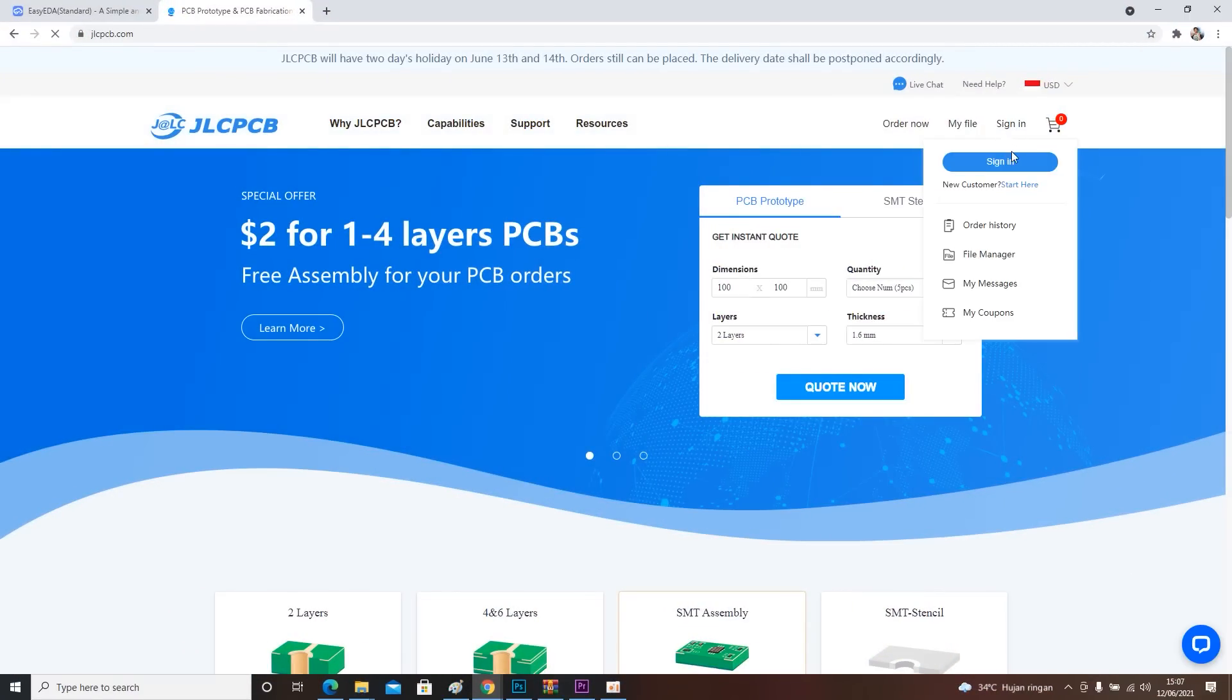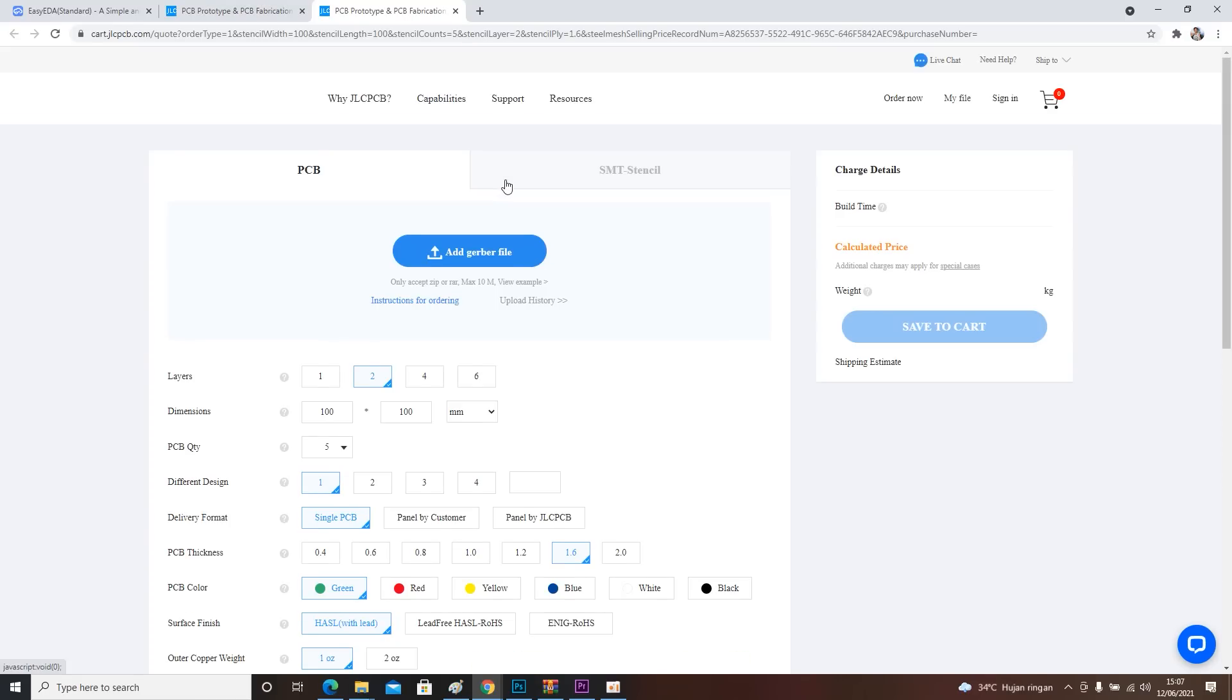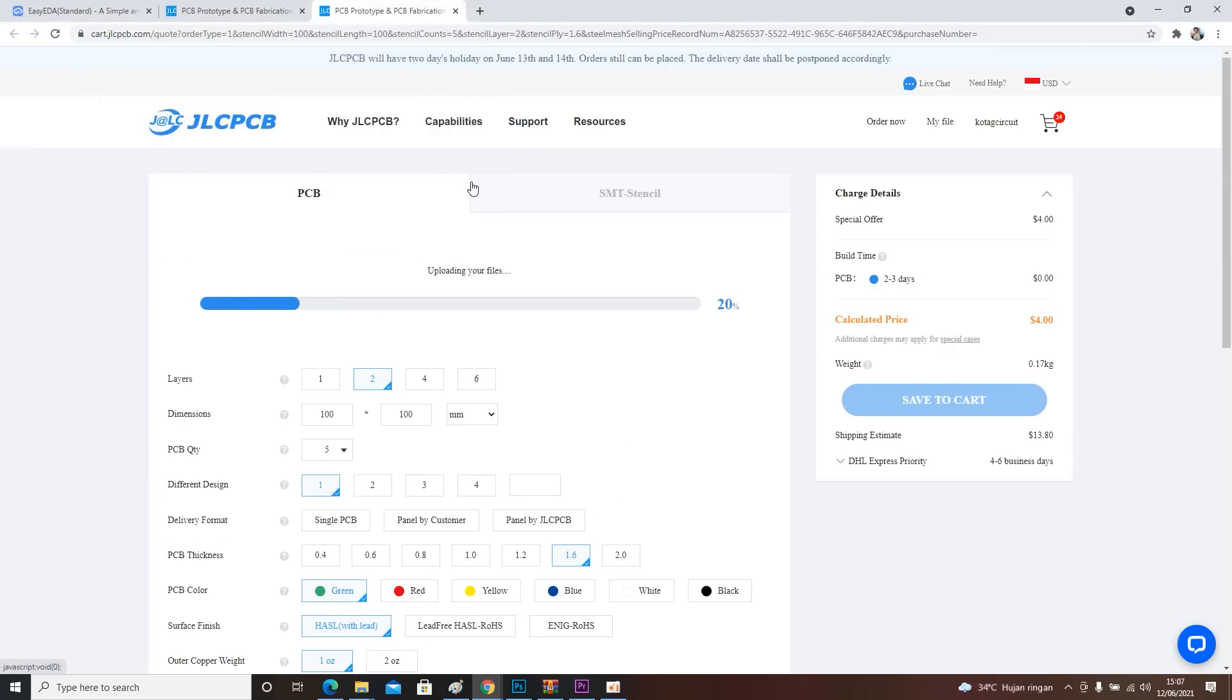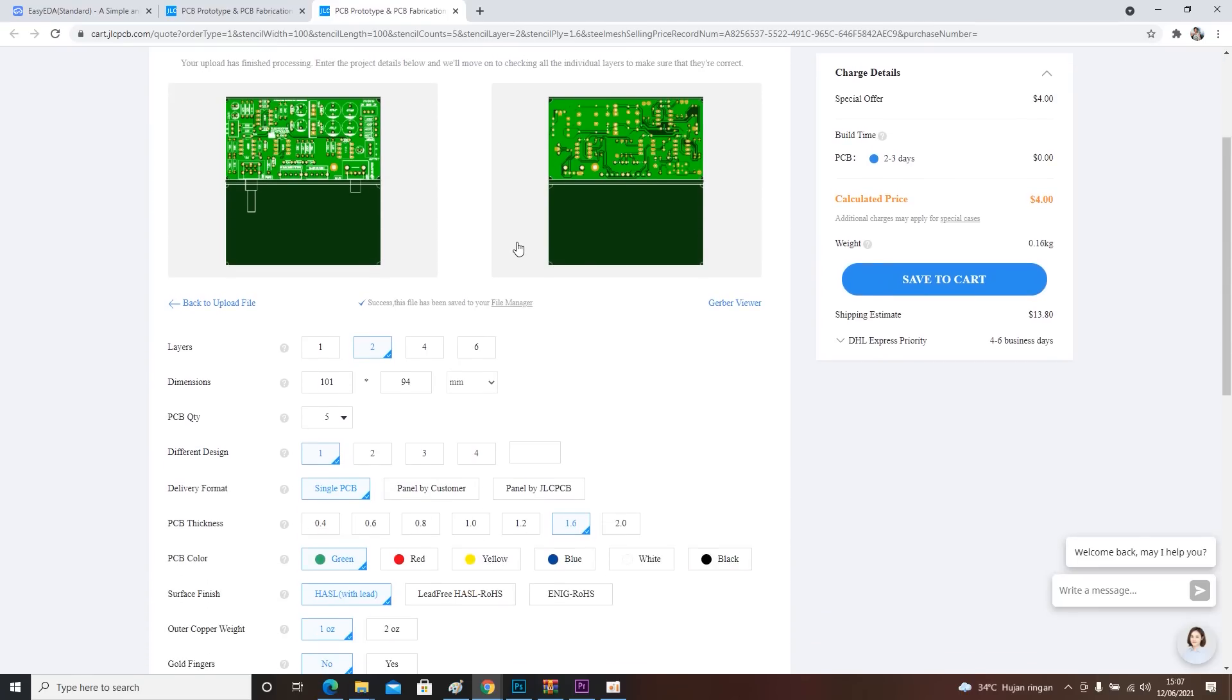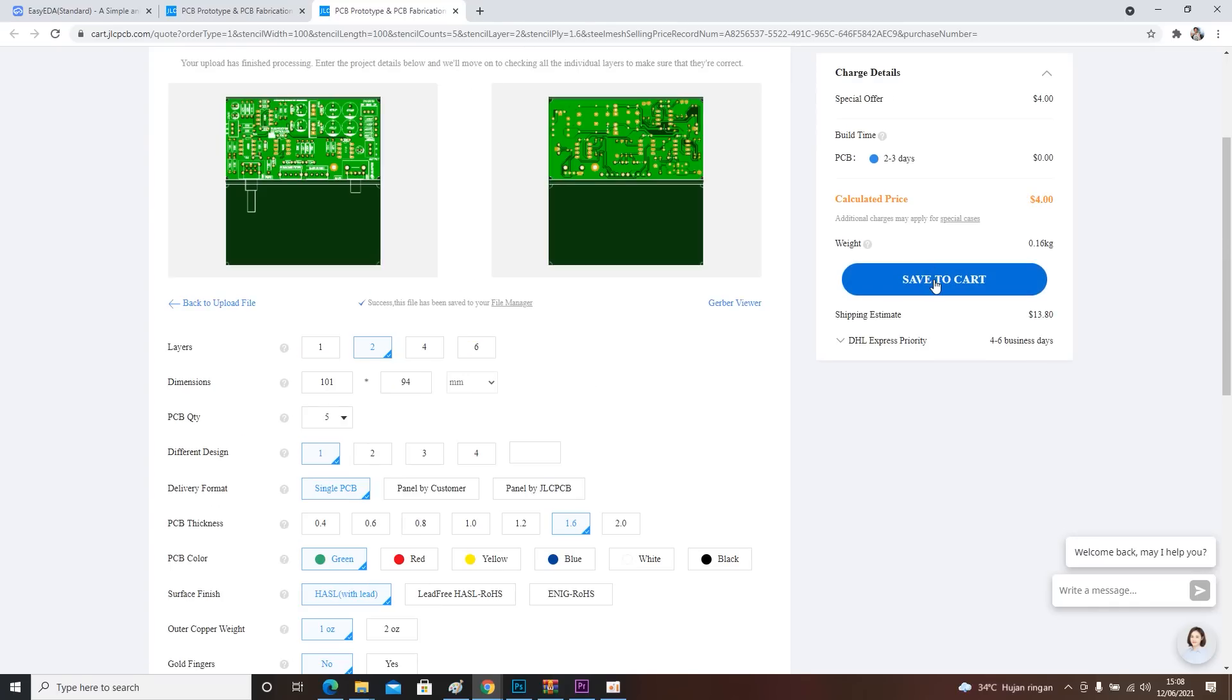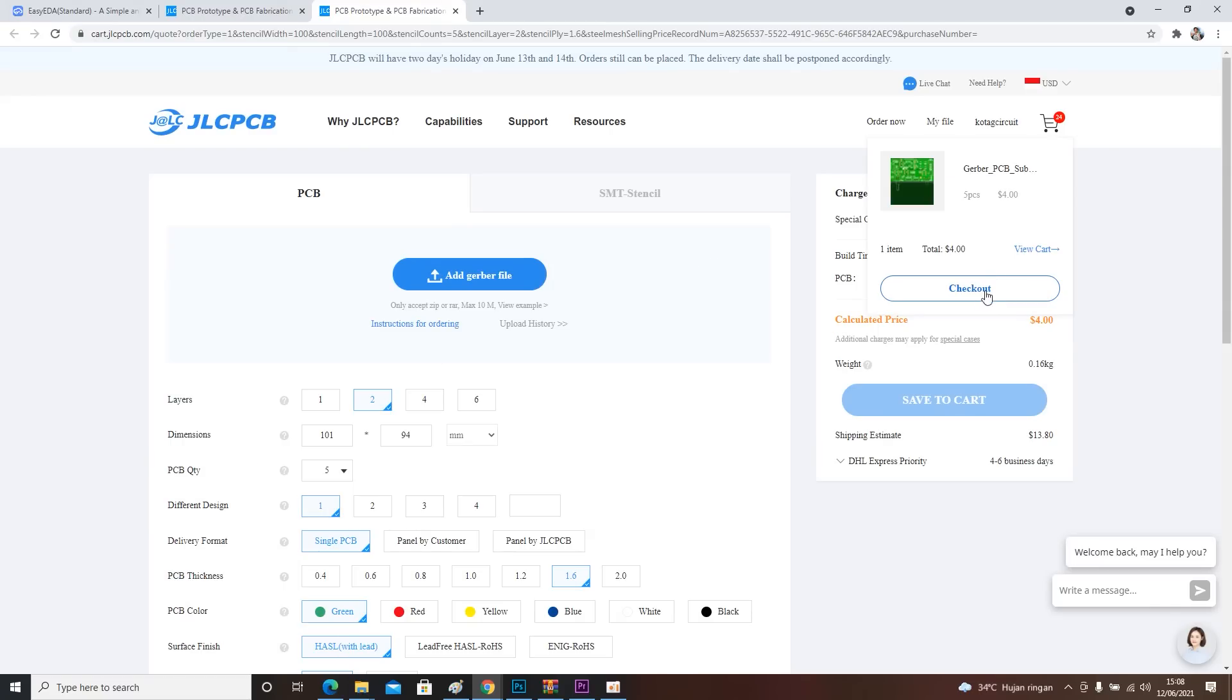Visit jlcpcb.com, then login or register if you don't have an account. Then click order now, add your gerber file, and wait for the file to upload. Then select PCB options such as quantity, PCB color, PCB thickness, and others. After that click save to cart and checkout. Then complete the payment on the next page.